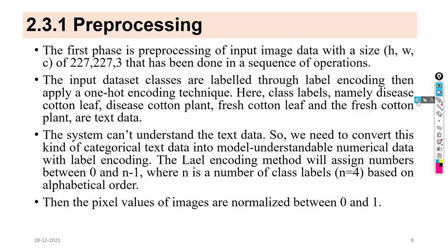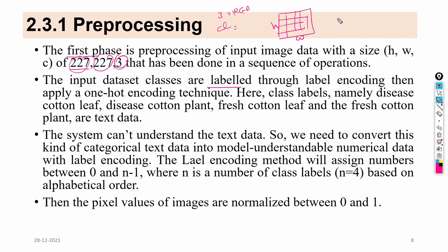In pre-processing, the input image size is resized to 227×227×3, where 227 is the width, 227 is the height, and 3 is the channel — representing RGB (red, green, blue). The class labels are categorical, so we convert them using label encoding and one-hot encoding techniques. Then, the pixel values of the images are normalized between 0 and 1.